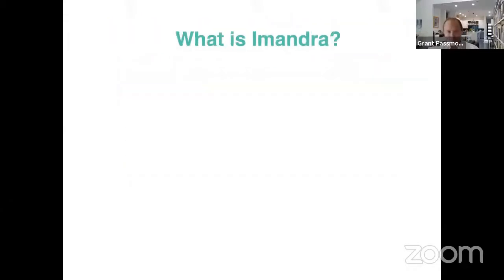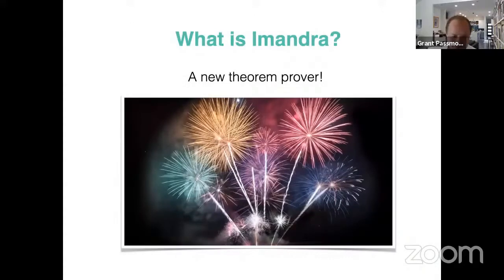So what is Imandra? First and foremost, and happy 4th of July fellow Americans, it is a new theorem prover. As you'll see, a theorem prover, also an interactive proof assistant, very much influenced by Boyer Moore by the approach of Thumb and in Q Thumb and ACL 2 in the sense that our theorem prover is actually based on a mechanized formal semantics we've given to a programming language and formal models are efficiently executable programs. In our case, our logic is based on a higher order subset of OCaml.